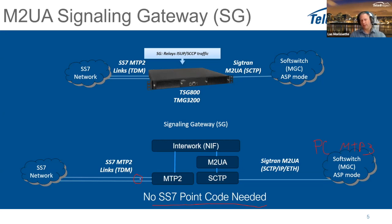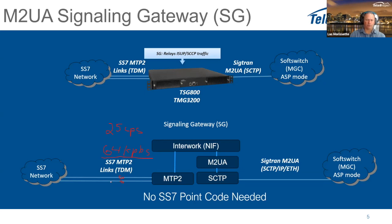The soft switch aggregates links from multiple devices, each with their own link sets. Since each TDM link is only 64 kbps, a rule of thumb for scaling is approximately 25 calls per second per TDM link. If you have high call volume, one link may not be enough. For redundancy, you should have at least two links per device, and multiple devices. A soft switch can handle multiple M2UA connections.